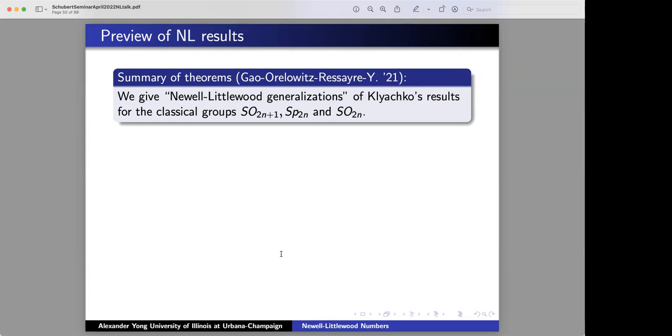Gidon Avrielowitz, Nicola Ressouere, and myself, we give Newell-Littlewood generalizations of the Klyachko results and really conjectural version of the Knutson-Tao results for the classical groups.